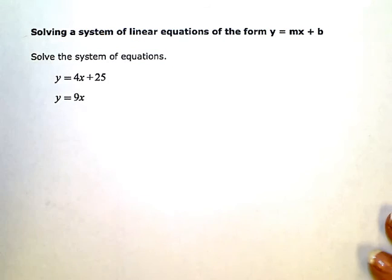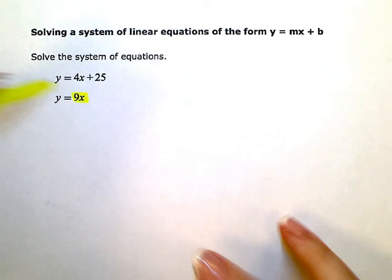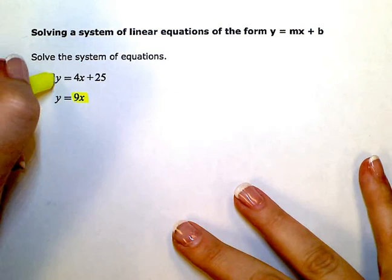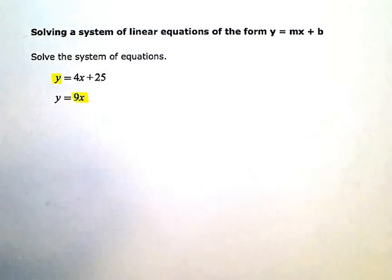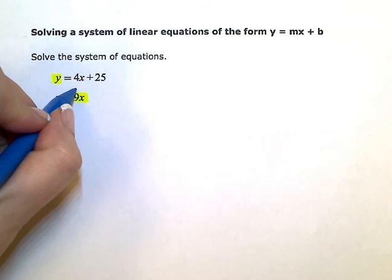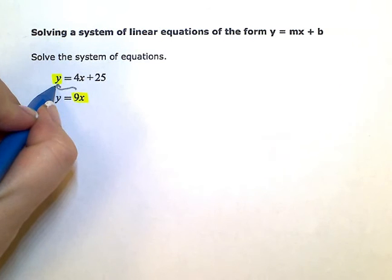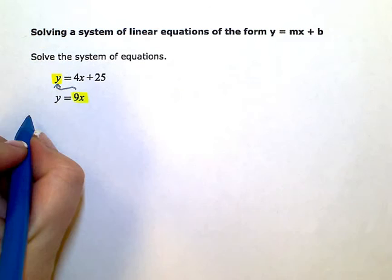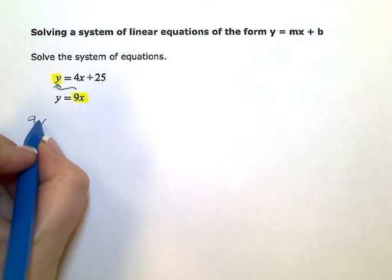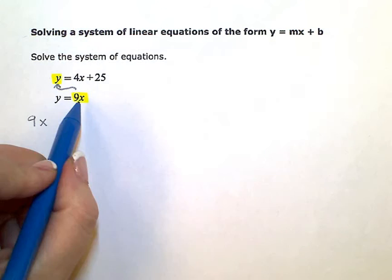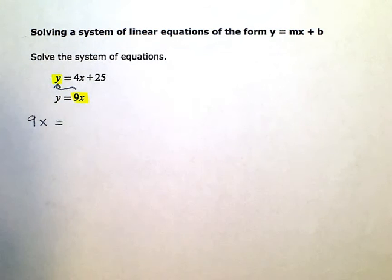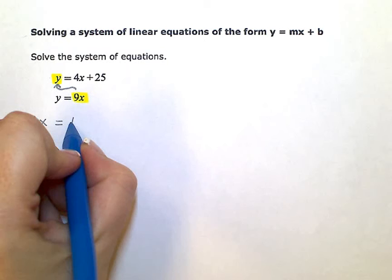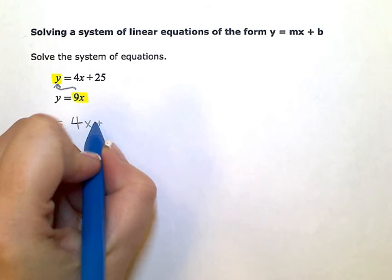So basically what I'm going to do here is take the 9x, and I'm going to substitute it into the other equation right there for the y. So that I have just one equation in one variable, x. So this is going to look like this. I'll have instead of y, I'm putting 9x on the left side of the equation, and then on the right side I have 4x plus 25.